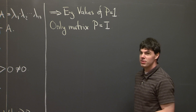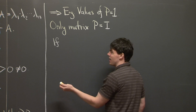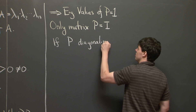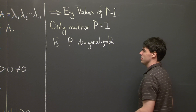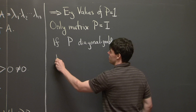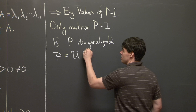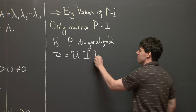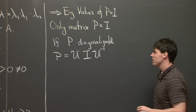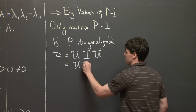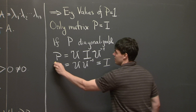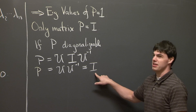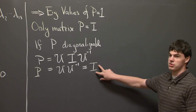Now, how do you actually show that? You can argue as follows. If P is diagonalizable — and every symmetric matrix is diagonalizable — then you can always write P as some matrix U times a diagonal matrix. In this case, the diagonal matrix has all eigenvalues equal to 1, so it's actually the identity matrix, times the inverse of the eigenvector matrix. But this is just U times the identity times U inverse, which is just U times U inverse. And U and U inverse collapse back down to the identity. So this shows that the only symmetric matrix with all eigenvalues equal to 1 is the identity matrix.